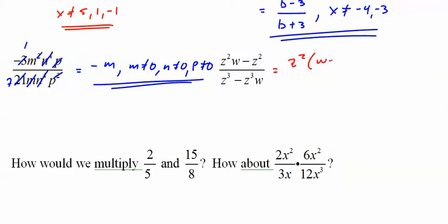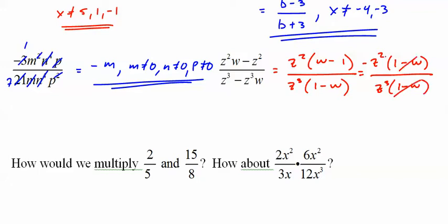z squared times w minus 1, z to the third, 1 minus w. And I've deliberately put this problem in here. We need to rewrite this. We need to factor out a negative 1. Top or bottom, it doesn't matter. I'll do it on the top. So that gives you negative w plus 1. Cancel those, cancel those. We are left with negative 1 over z. z cannot equal 0, w cannot equal 1. So notice that trick with the negative. We'll do that a lot.